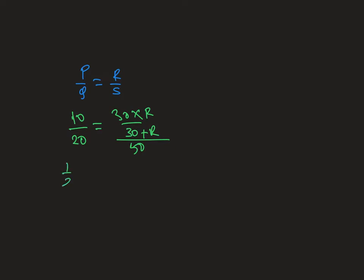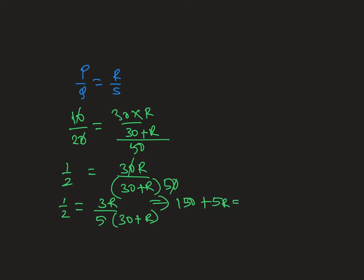Simplifying: 1/2 = 30R/(30+R)×50. Simplifying further: 1/2 = 3R/(5(30+R)). Cross multiplying: 5(30+R) = 6R. Therefore, R = 150Ω.